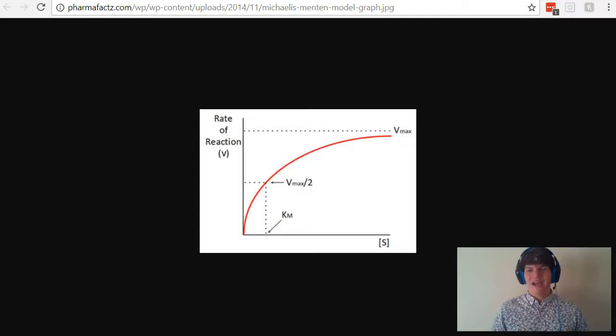Because Km is defined as the substrate concentration, which is on the x-axis. So you're looking for an x-axis value. So to properly define Km, we'd say that Km is the substrate concentration at half of Vmax.